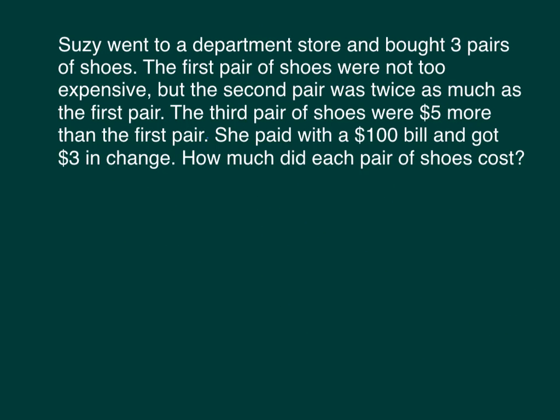Last but not least, Suzy went to a department store and bought three pairs of shoes. The first pair of shoes was not too expensive, but the second pair was twice as much as the first pair. The third pair of shoes were $5 more than the first pair. She paid with a $100 bill and got $3 and change. How much did each pair of shoes cost? Well, if she paid with $100 and she got $3 and change, that means the total she spent was $100 minus $3 is $97. That's her total bill.